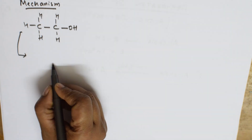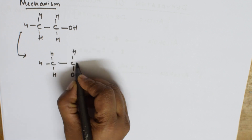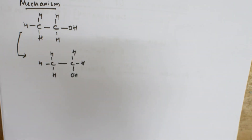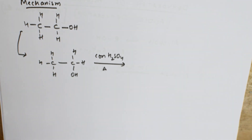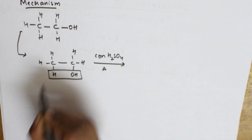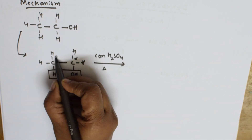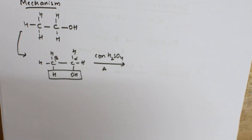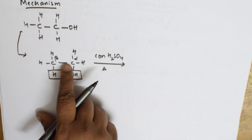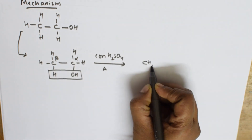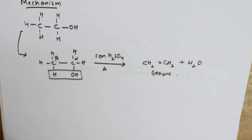Let me write the structure: I'll write the ethyl group, then OH, and H and H — that's primary alcohol. Now I treat it with concentrated H2SO4, the dehydrating agent, and heat it. In this step, water is eliminated. This carbon is alpha, the next is beta. We take hydrogen from the beta carbon and OH from the alpha carbon, the bond shifts, and we get CH₂=CH₂ plus water molecule — that's ethene.